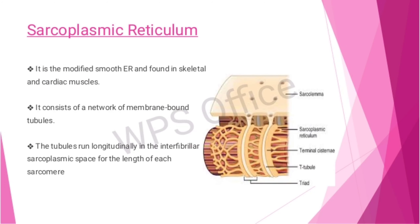The sarcoplasmic reticulum is the modified smooth endoplasmic reticulum found in skeletal and cardiac muscles. It consists of a network of membrane-bound tubules. These tubules run longitudinally in the interfibrillar sarcoplasmic space for the length of each sarcomere.